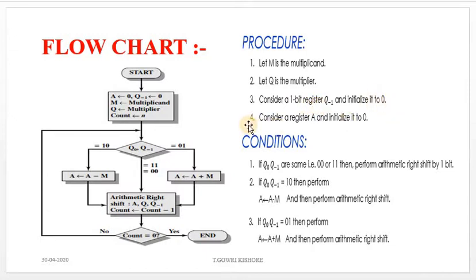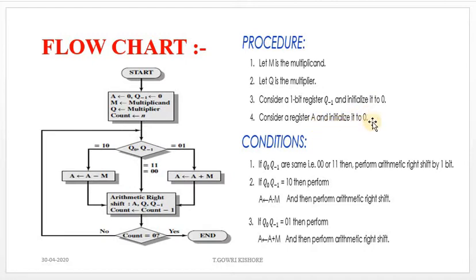Consider a register A, which is the accumulator, and initialize it to 0. The bit size of the accumulator will be the same as the bit size of the Multiplicand — whatever bit size the Multiplicand has, the accumulator will have the same bit size.